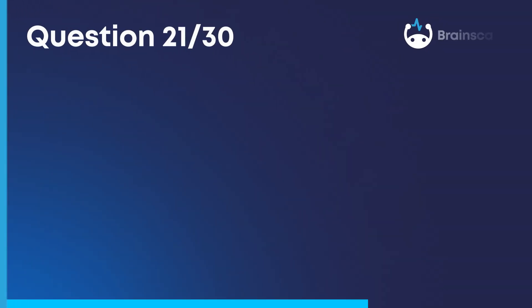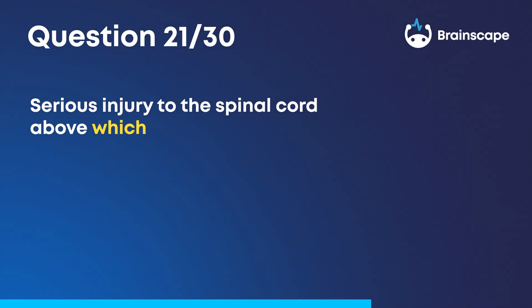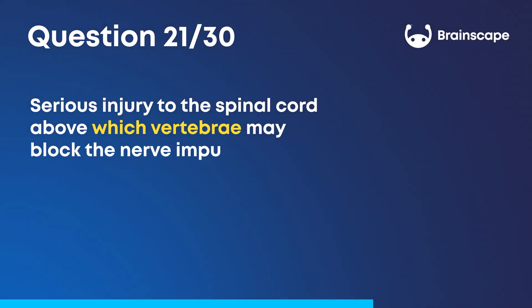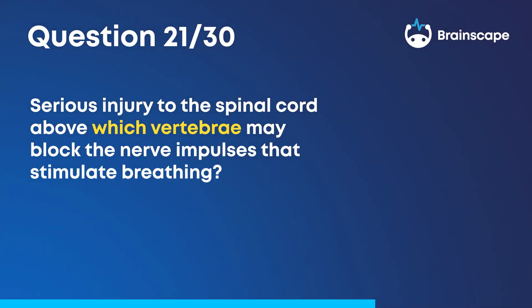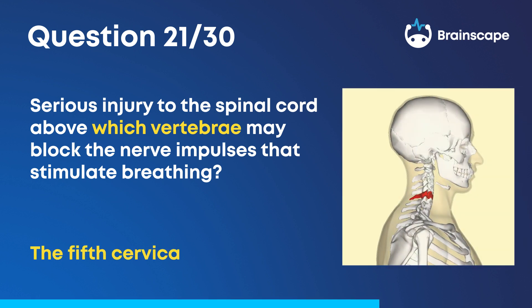Question 21. Serious injury to the spinal cord above which vertebrae may block the nerve impulses that stimulate breathing? The 5th cervical vertebra, or C5.